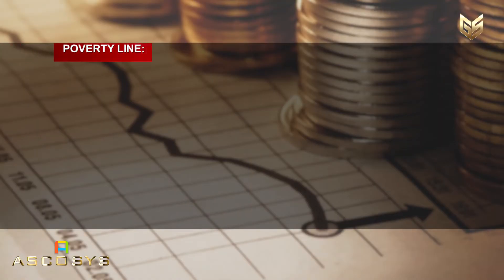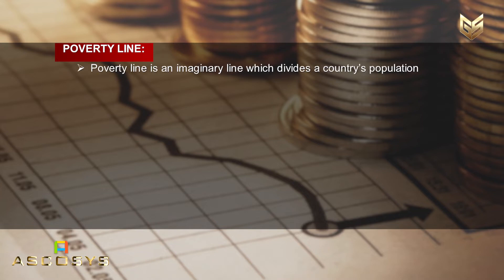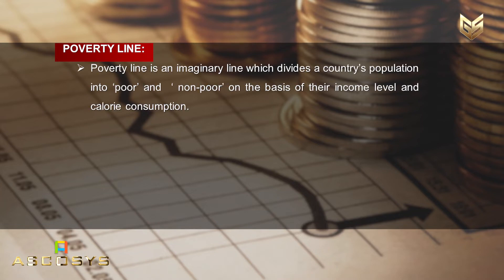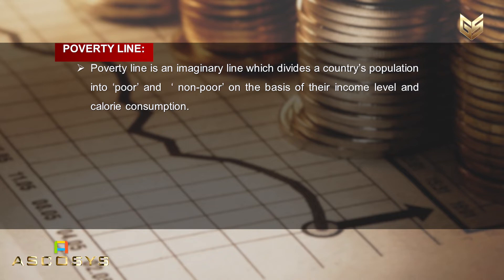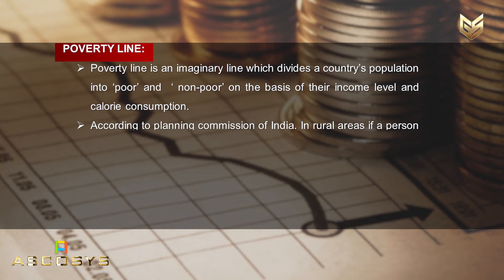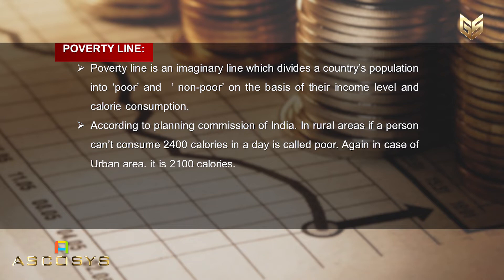After discussing absolute and relative poverty, let's move on to an important related term — the poverty line. The poverty line is an imaginary line which divides a country's population into poor and non-poor on the basis of their income level and calorie consumption. Through this concept we can define poverty using income level and calorie consumption as the base.